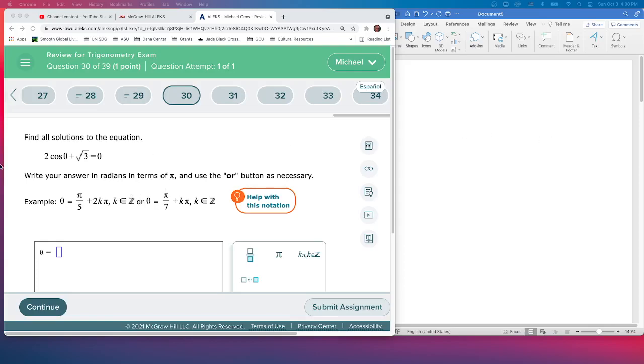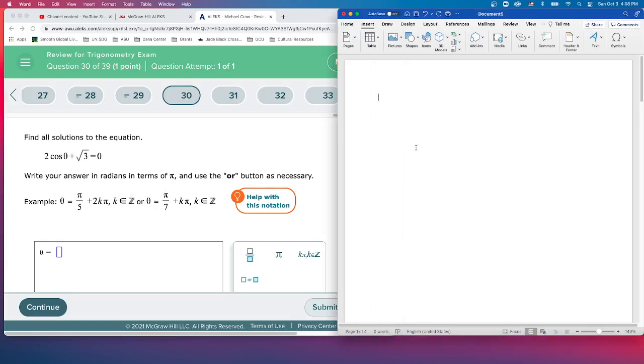Okay, so first let's solve it and then we'll talk about how to write this up. We're going to go with the blue. We've got 2 cosine of θ plus the square root of 3 equals 0. So we're solving for θ.